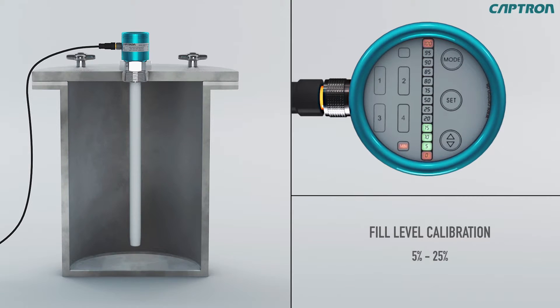Fill the tank with 5 to 25% of the desired measurement range. Now with up-down you can set the value which corresponds to the actual fill level. Then confirm the value with set.